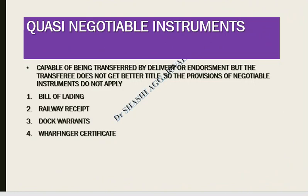Quasi-negotiable instruments can be transferred by delivery and endorsements. However, if the transferor's title is defective, the transferee also gets a defective title — unlike true negotiable instruments. Examples of quasi-negotiable instruments are bill of lading, railway documents, and wharfinger certificates.